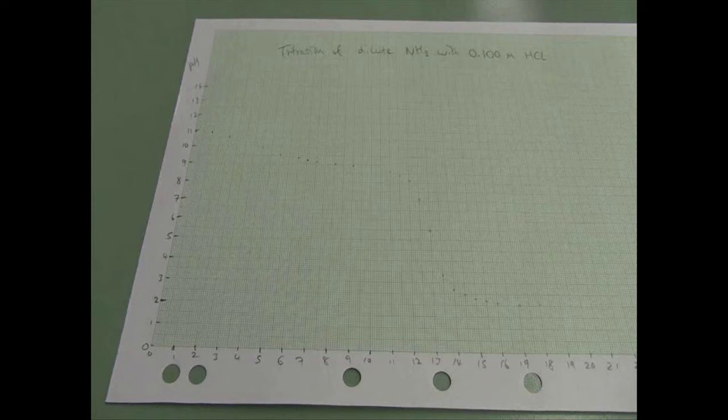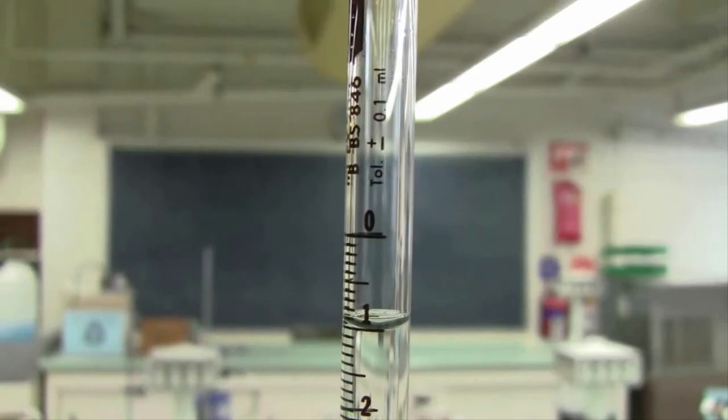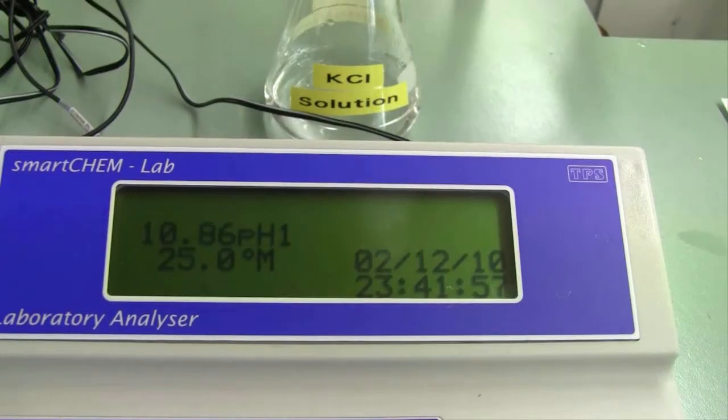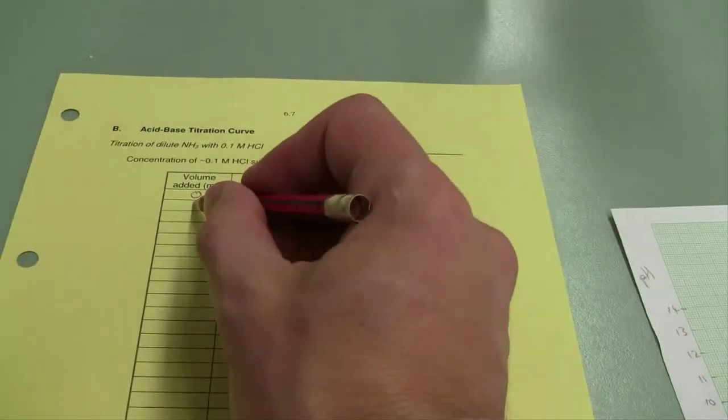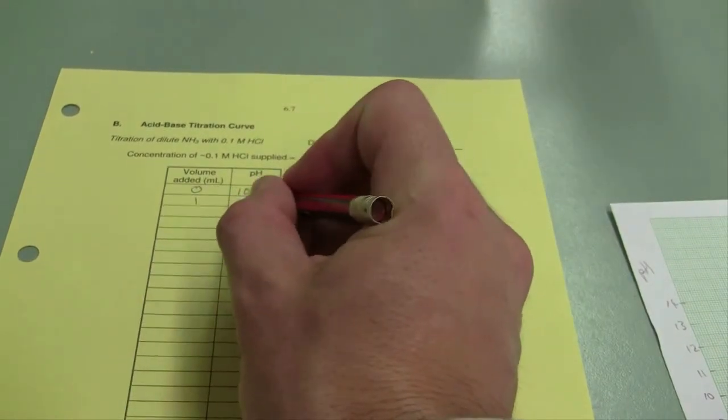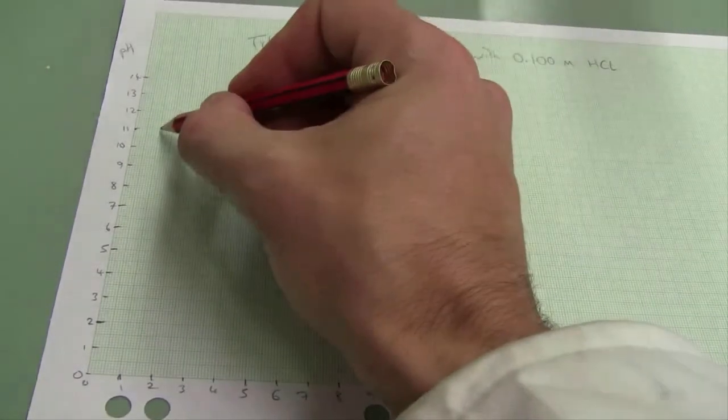What I would like you to do right throughout the experiment is make an addition from your burette. One ml additions in the first instance. Take a reading from your pH meter, write down the result in your result sheet, and then plot it on your graph. Repeat this procedure throughout the experiment.